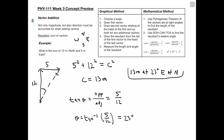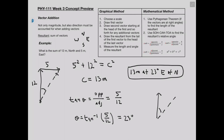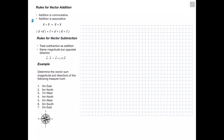We write our complete answer as 13 meters at 23 degrees east of north. To explain this: imagine an arrow pointing directly north, then rotate 23 degrees toward east — that gives our resultant direction. That's why we say 23 degrees east of north.